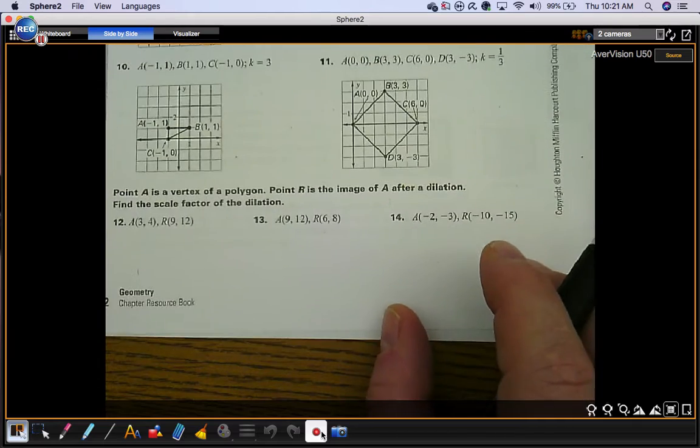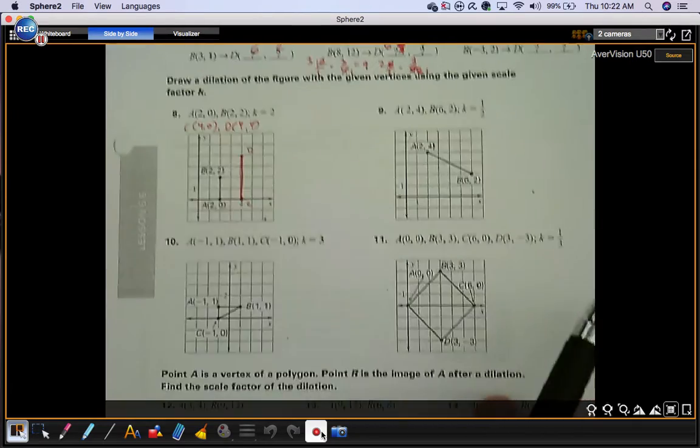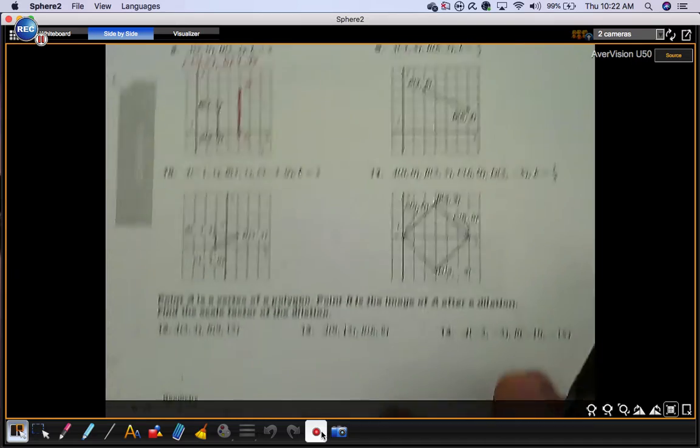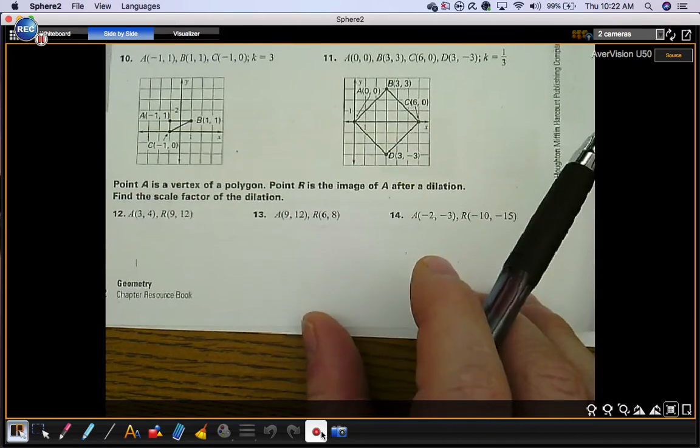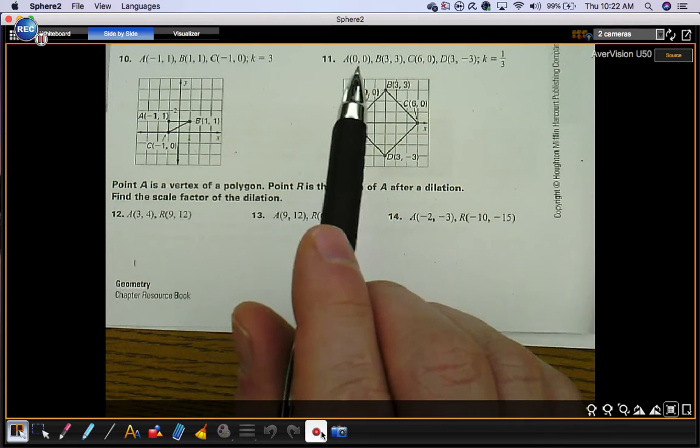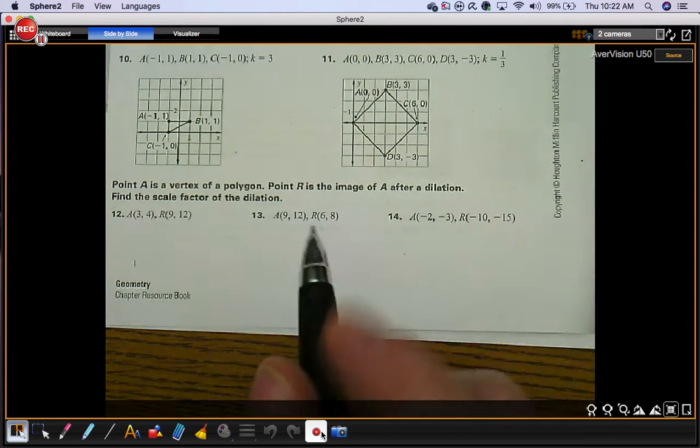Maybe we'll do one more. So, that was an enlargement because K was larger than 1. Number 11 is a reduction because K is less than 1. So, we need to find where all these ordered pairs map to.